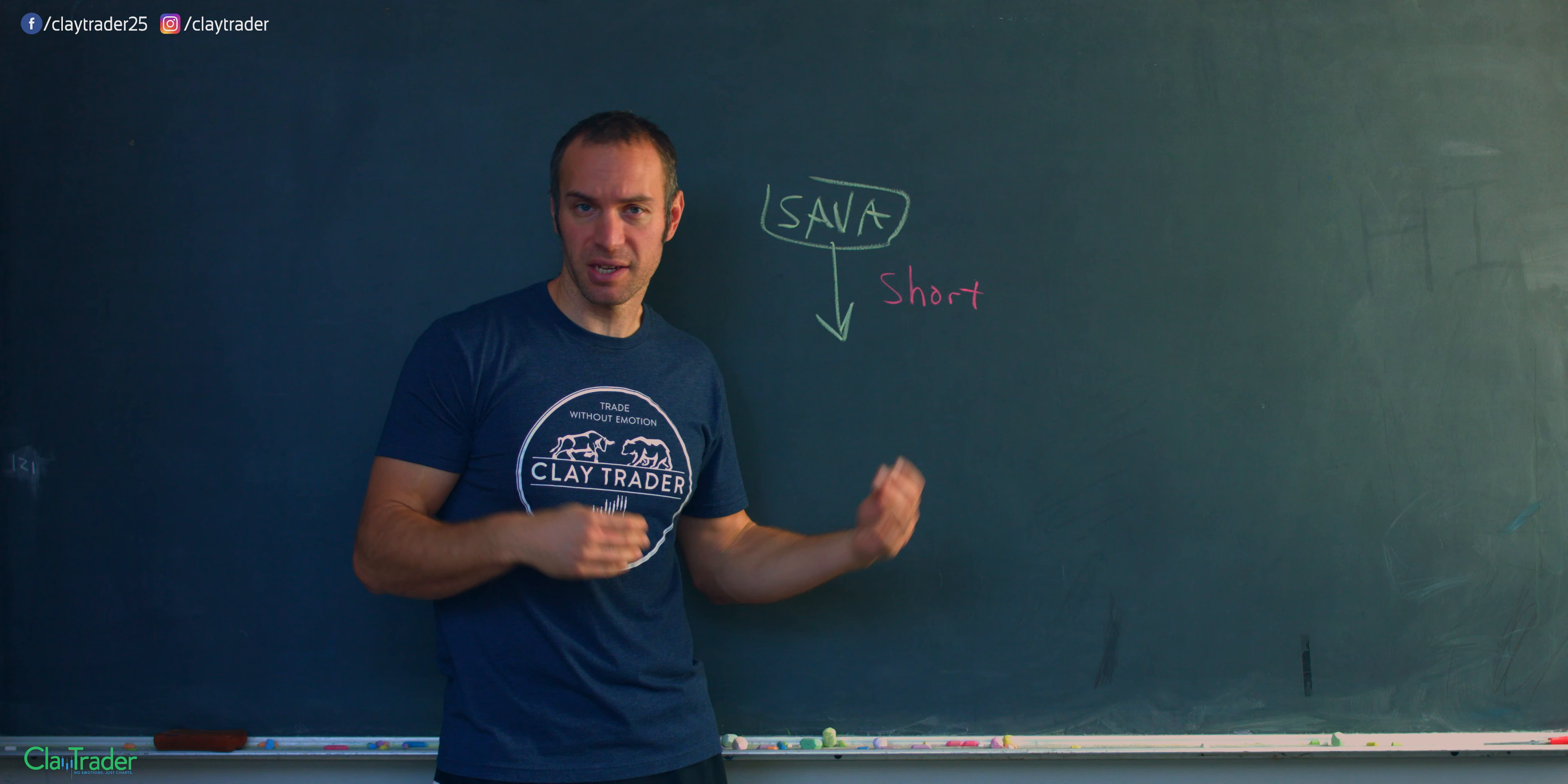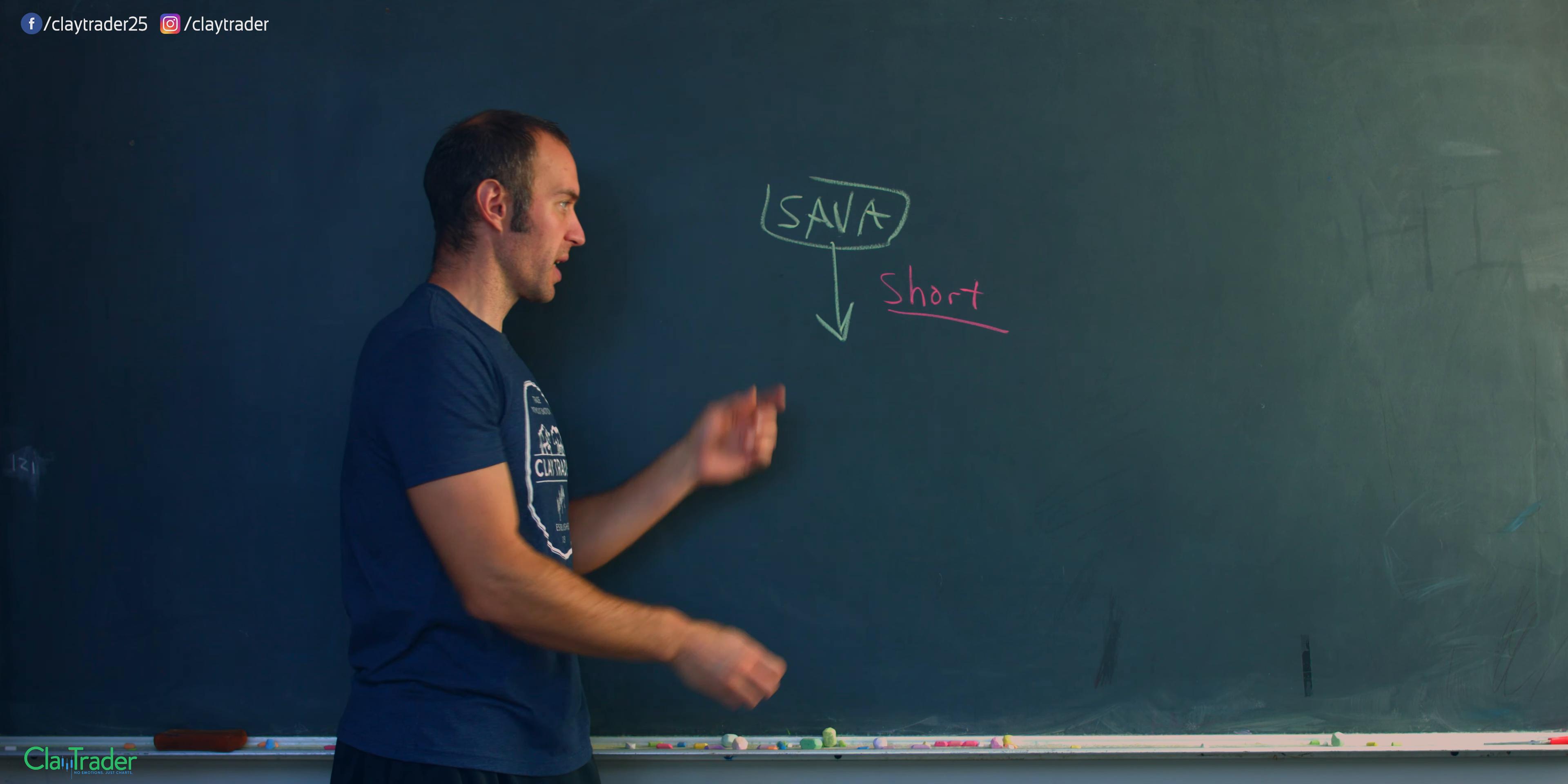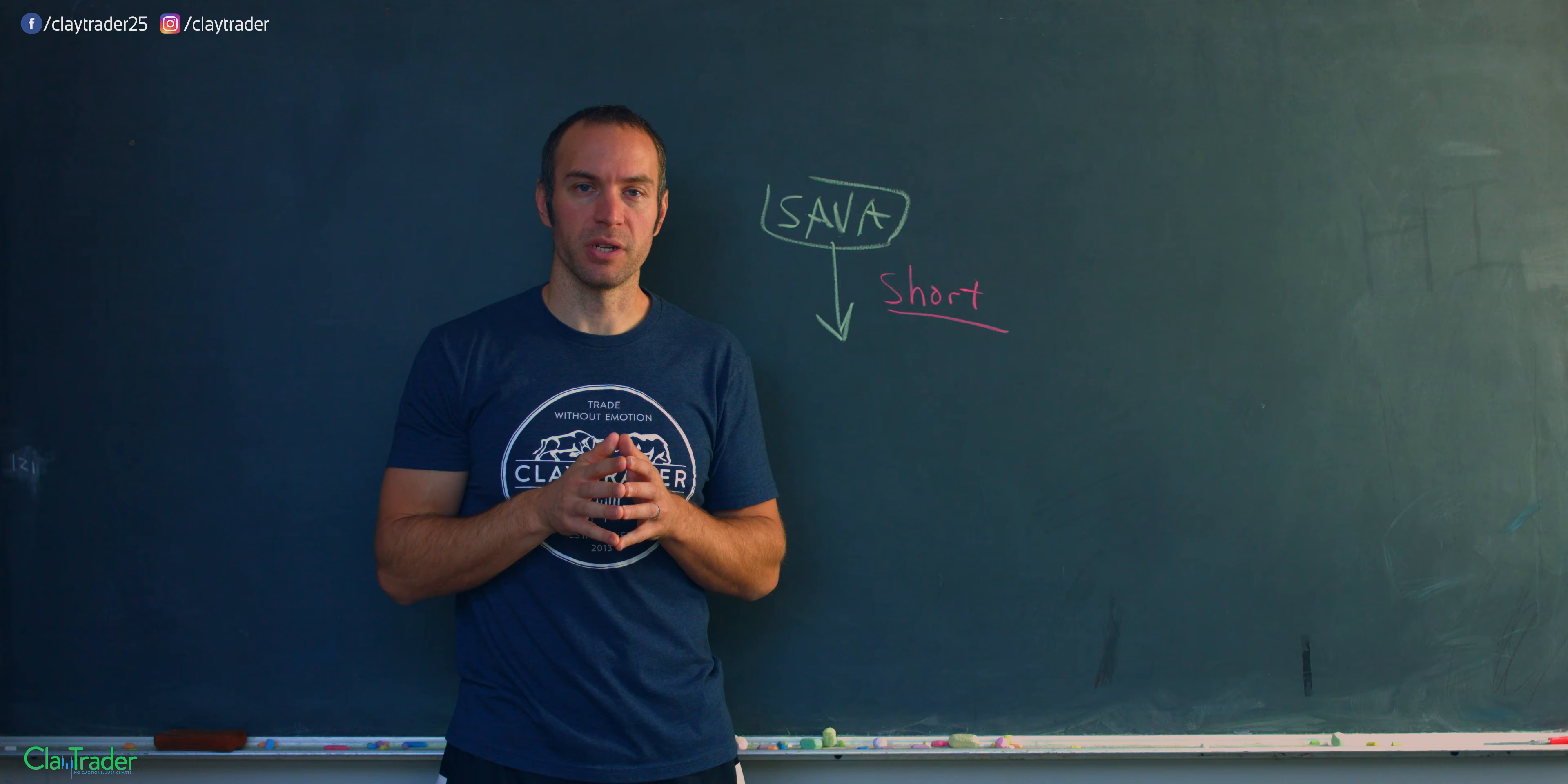It doesn't necessarily need to be a stock. It could be in any market, the crypto market. But if something goes down in value because you're short, you would make money. So that's the context here. SAVA was the stock. I wanted to see it go down, so I was looking to short the stock. Let's see what happens. I'll pick it up here with the live trade footage.